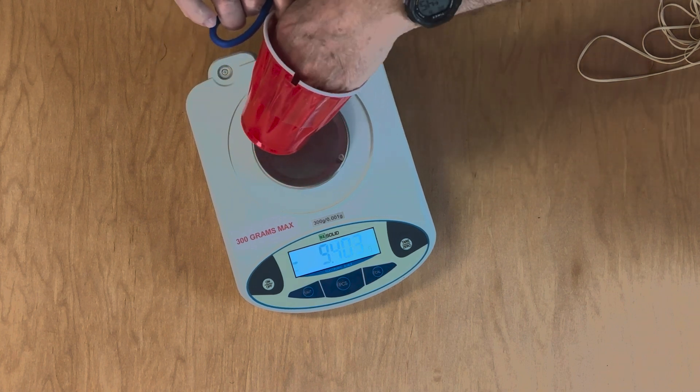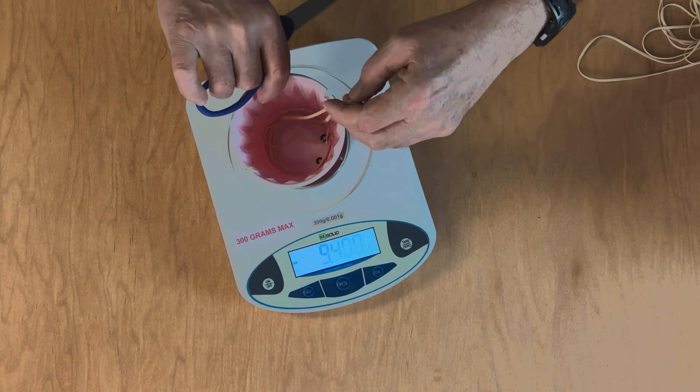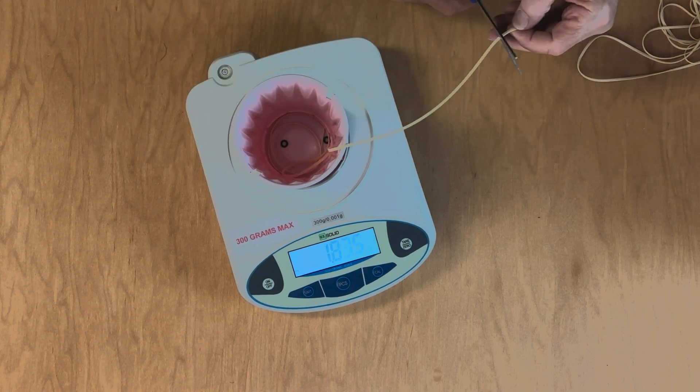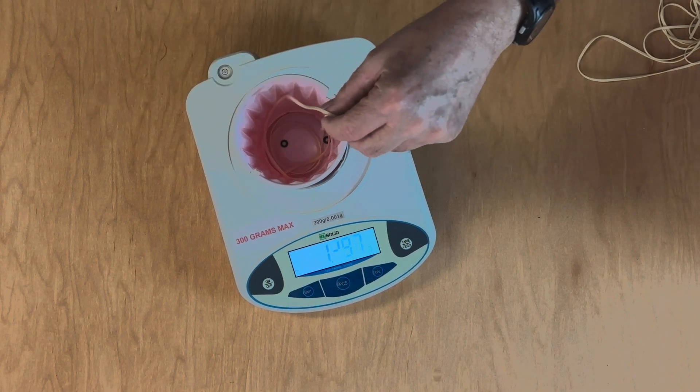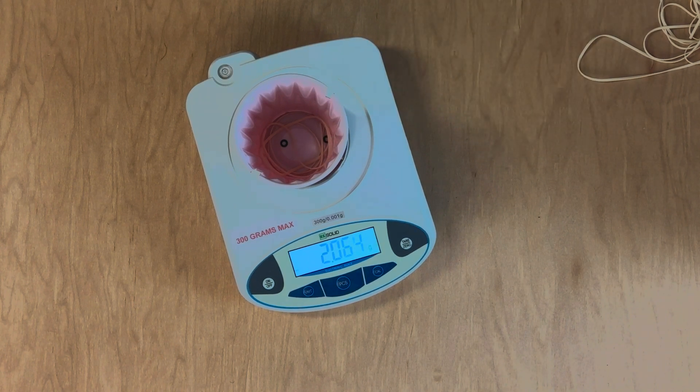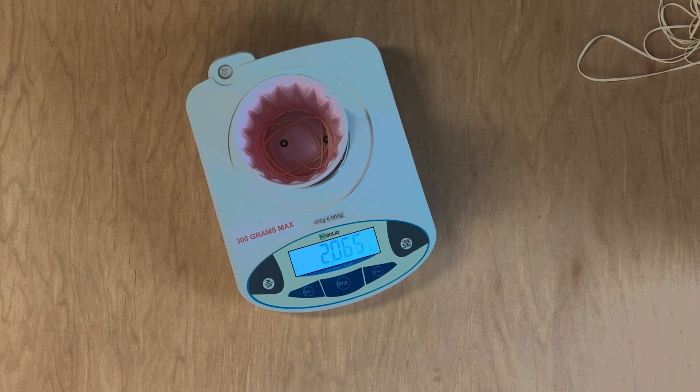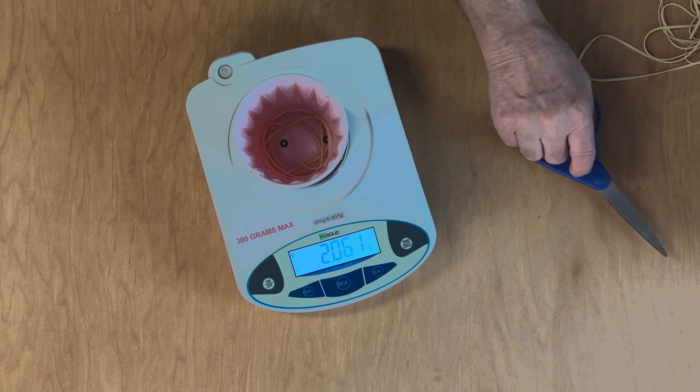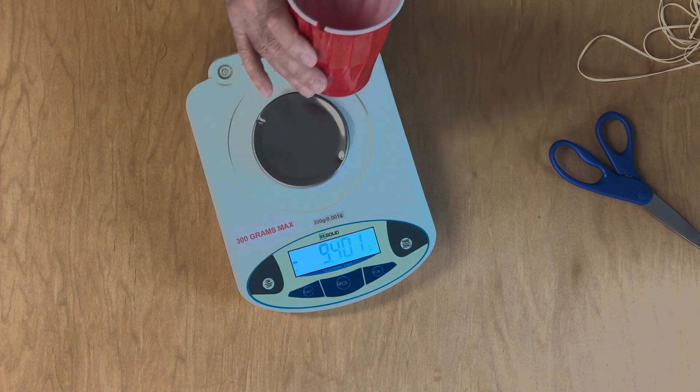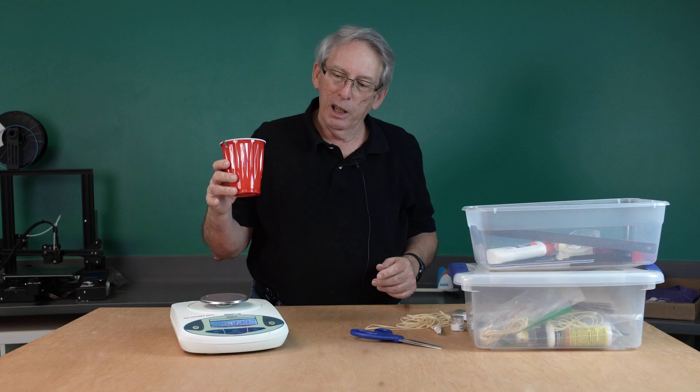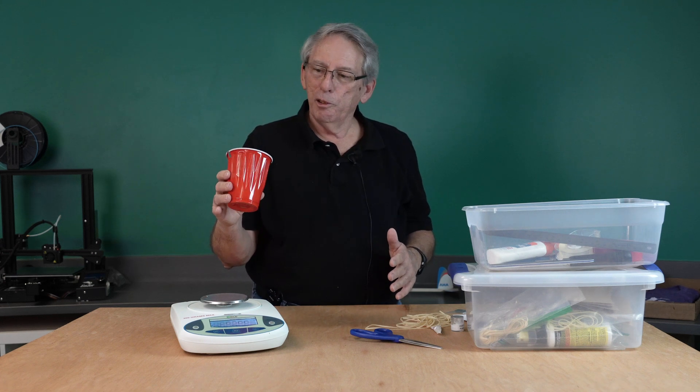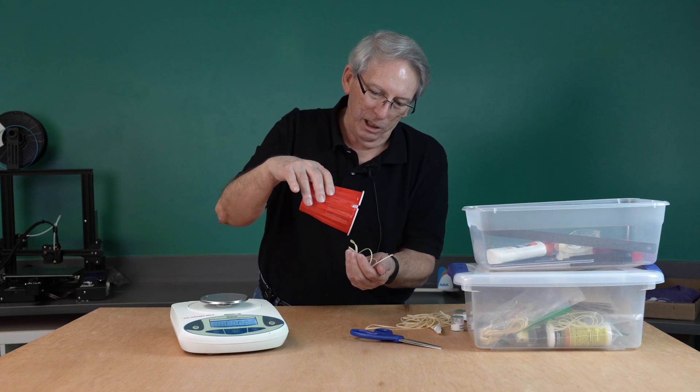That got it down to 2.1. Snip off a little bit more. Okay, so now what's in the cup weighs 2.06 grams. I'm not worried about six hundredths of a gram because we still have to tie the motor together. So once you get the amount of rubber that you need weighed out, dump everything out of the cup.